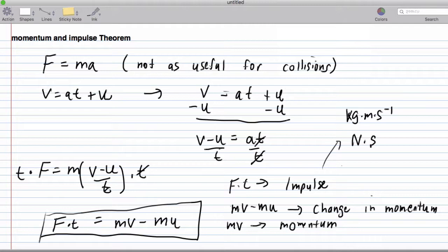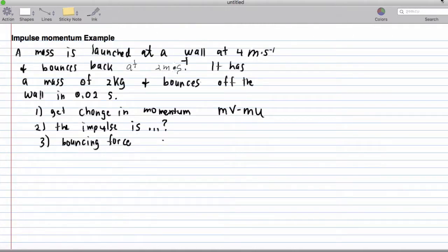What I'd really like to do now is actually apply this to solving an example. So we have a mass launched at a wall at four meters per second. It bounces back at two meters per second. We have its mass and we have the time it takes to bounce off the wall. This is the typical kind of momentum problem. We want to know the change in momentum, we want to know the impulse on it, and we want to know the force of bouncing. Let's actually draw what's going on. So we have the ball launched at the wall.